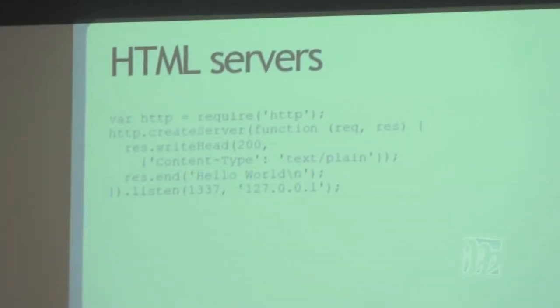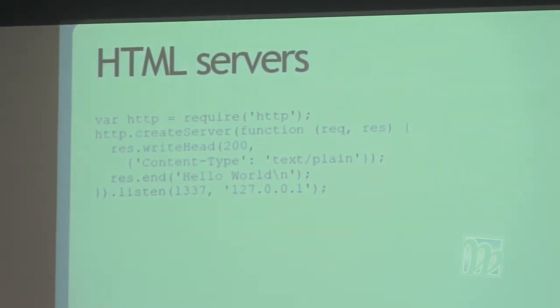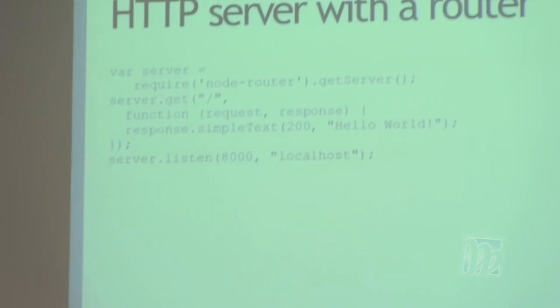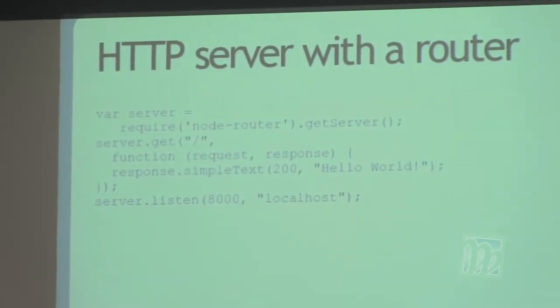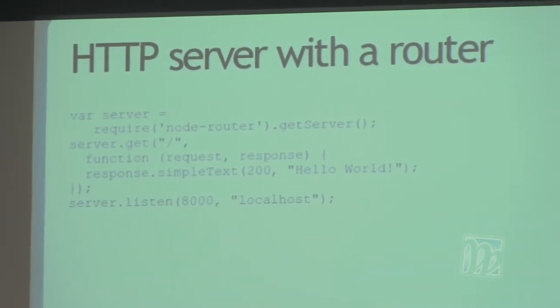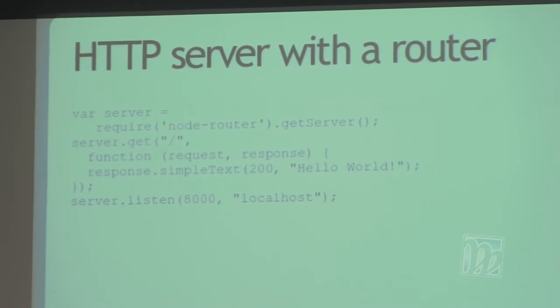A simple HTTP server: require the http module, create a server, when a request comes in write a 200 text/plain response and send out 'hello world' — it's that simple. It gets more complex when you start layering in routes: if a GET request comes in to the root of the web server, respond this way. And there are similar ways to layer on file servers — if something happens within this part of the tree, serve it as a file; otherwise serve it as code.